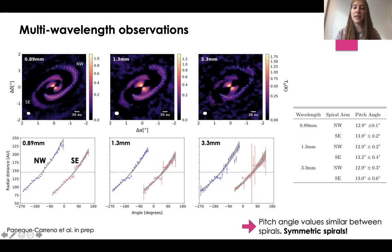These are the subtracted images once we have subtracted the azimuthally averaged intensity profile in all the images, in order to enhance the spiral and be able to trace it. We trace roughly symmetric spirals at all wavelengths — here are the pitch angle values — and this is expected in the case of a gravitationally unstable disc.